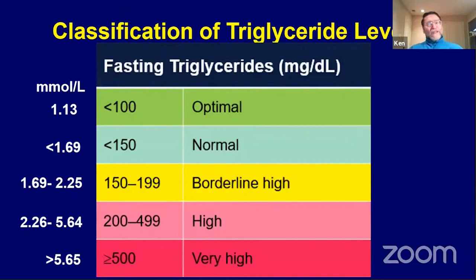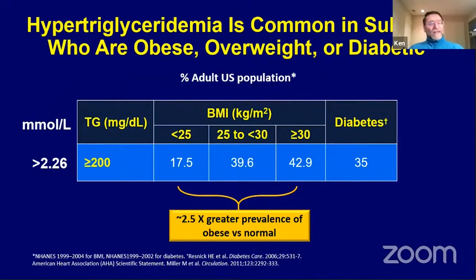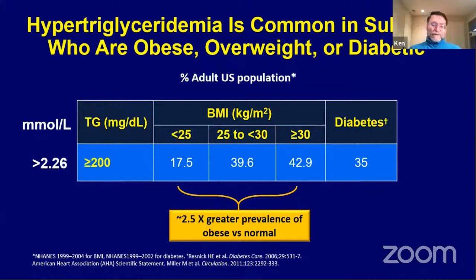This slide shows the classification of triglyceride levels — listed in milligrams per deciliter and millimoles per liter, since most countries use millimoles per liter. You can see the optimal, normal, borderline high, high, and very high levels. In the United States, people who are overweight or obese — BMI 25-30 for overweight and greater than 30 for obese — have a high percentage of elevated triglycerides, approximately 40%. So if you see a lot of obese patients, you're going to see very frequent elevated triglyceride levels.